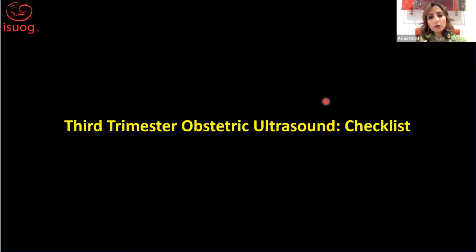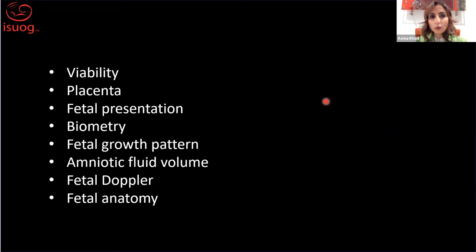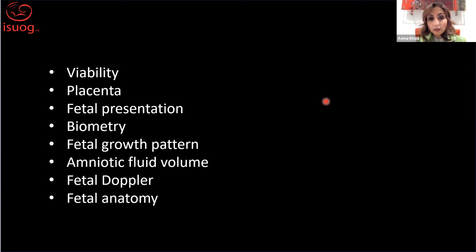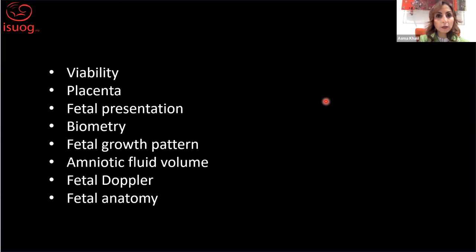I'd like you to move away from the concept that the third trimester ultrasound is just a gross scan. We use a checklist approach, and this is the checklist included in the guideline — from viability, to looking at the placenta, the fetal presentation, the biometry, the amniotic fluid volume, Dopplers depending on the indication, and the fetal anatomy. I'm going to focus on the fetal anatomy section.